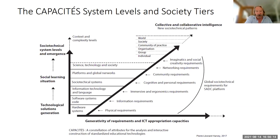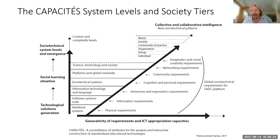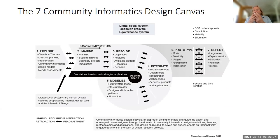All socio-technical systems are built around a hardware system, but on top of that we have science, technology, society, and nature — and transdisciplinarity at individual, group, organizational, communities of practice, society, and world levels. We've built a life cycle that can be applied generically to all kinds of processes: explore a problem, imagine solutions, find the best solution, and integrate the technology.